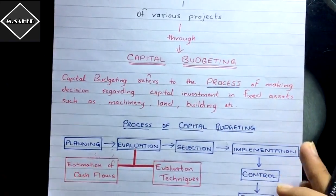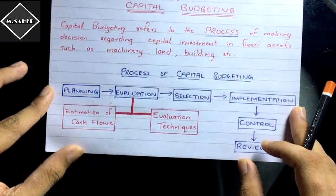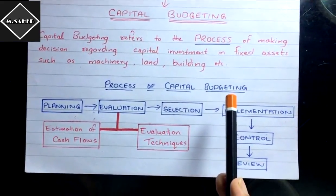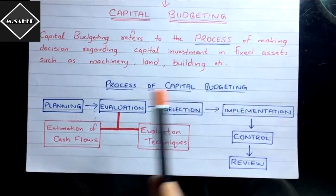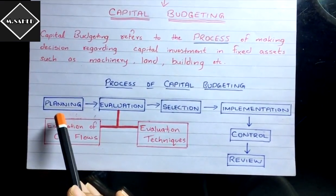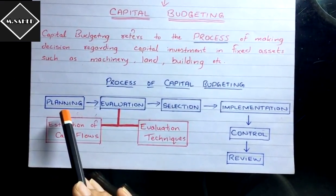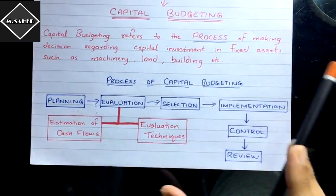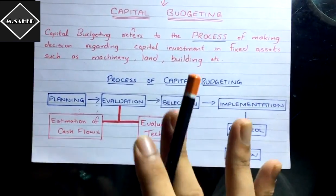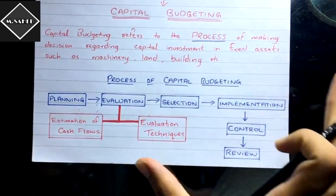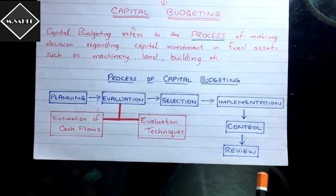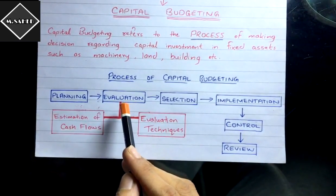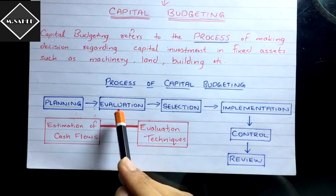So what is this process of capital budgeting? It starts with planning. First, the company has to plan how much money they have and identify what potential investment opportunities are available.